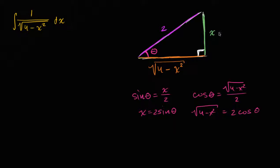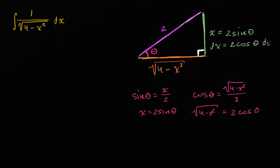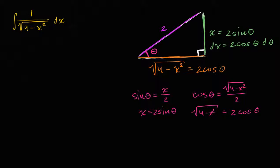So let's make the substitution. Let x equal two sine theta. Then dx is going to equal two cosine theta dθ. And the denominator, the square root of four minus x squared, is two cosine theta.